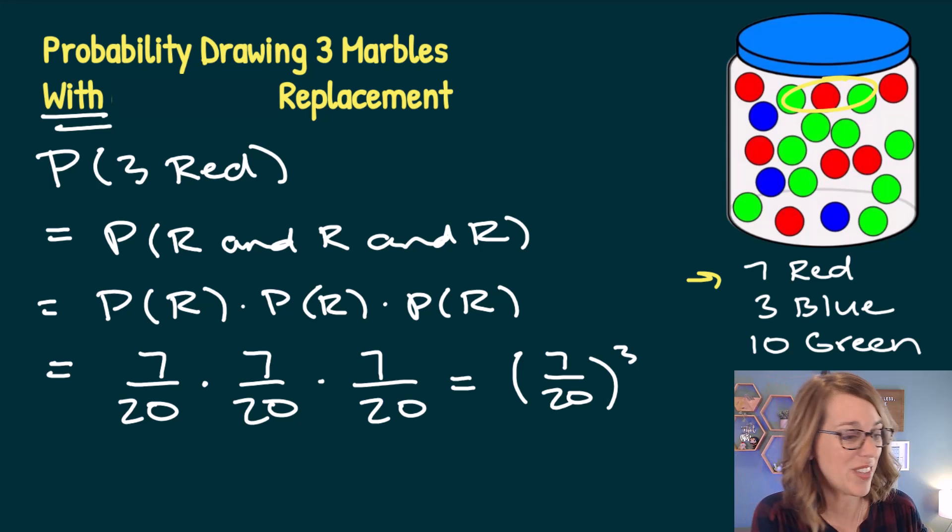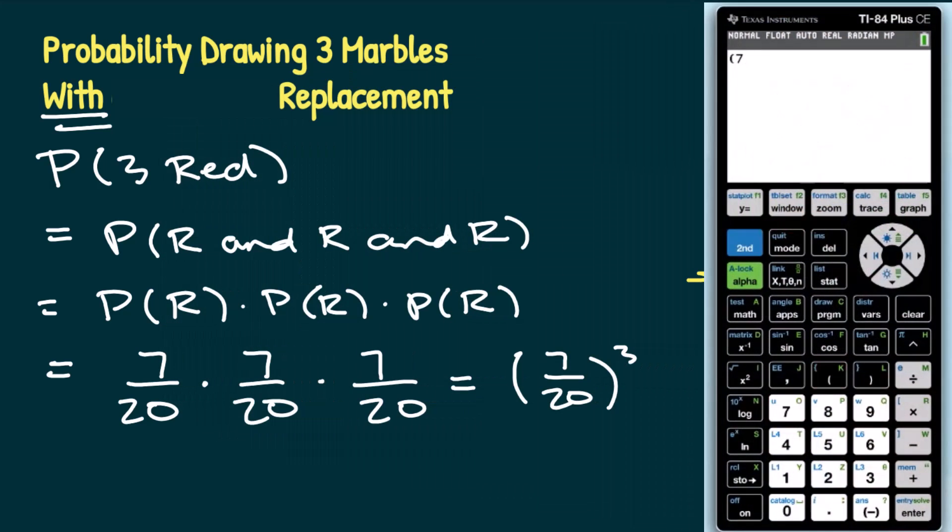Let's put this into the calculator. So I'm going to go parenthesis seven divided by 20, and let's do this to the third power, so caret three, enter.